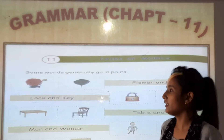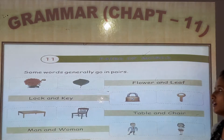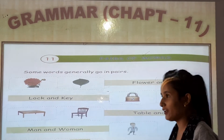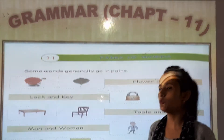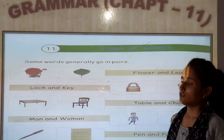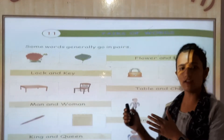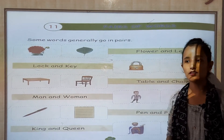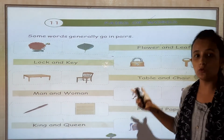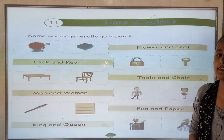In page number 38, you can see pairs of words. There are some words and they have their pairs. What is a word? A word is a combination of letters. With the help of letters, we can make words, and with the help of words, we can make a sentence.